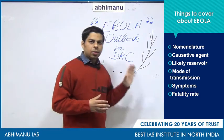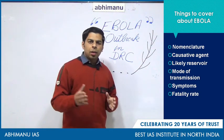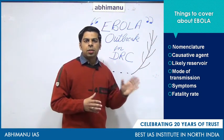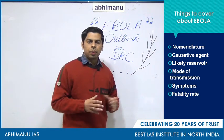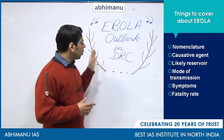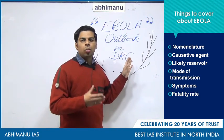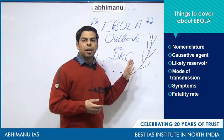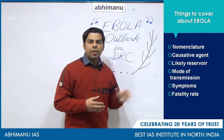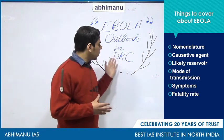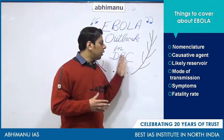Coming to fatality rate — this is important. Currently the world is witnessing the corona outbreak with earlier estimates of about 4% fatality rate; even SARS had 10%. But Ebola has an overwhelming rate of over 50%, and during the initial outbreak the rate was almost as high as 80%. This makes it one of the most dreaded diseases causing high fatality.